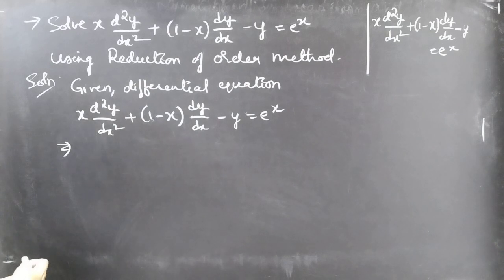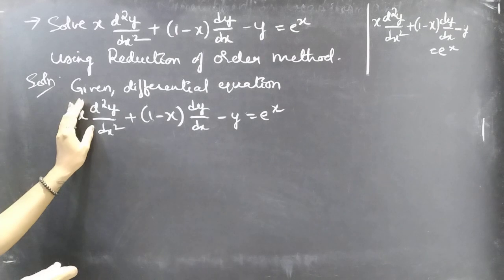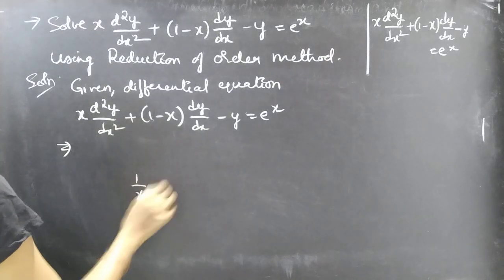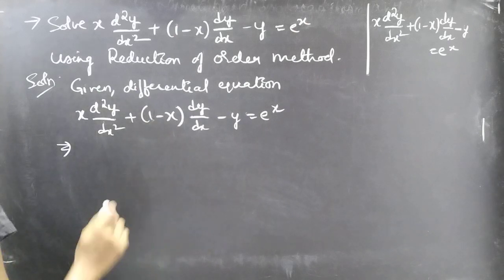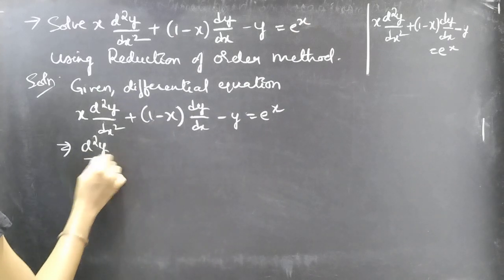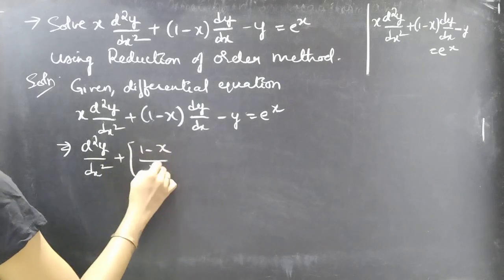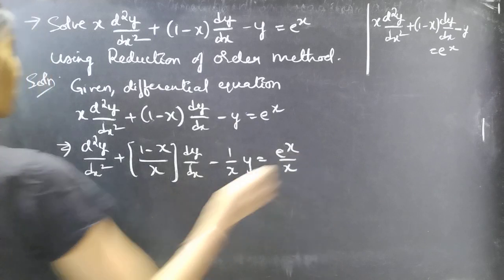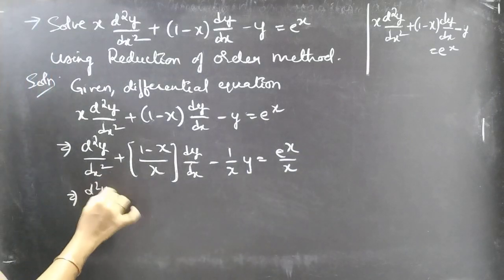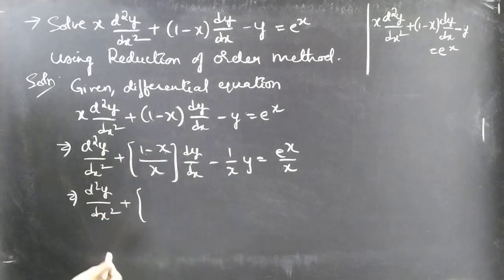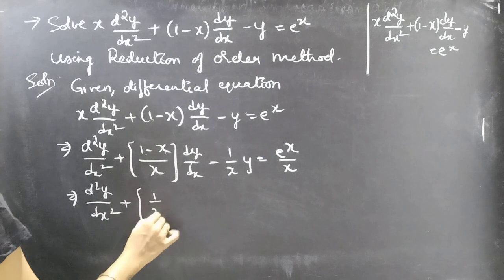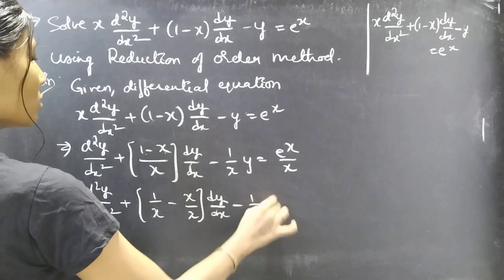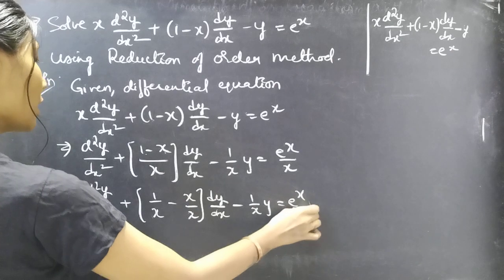Now let's write the given differential equation in standard form. To do that, we need to make the coefficient of d²y/dx² equal to unity, so we divide both sides by x. We get: d²y/dx² + (1 − x)/x · (dy/dx) − (1/x) · y = e^x / x.